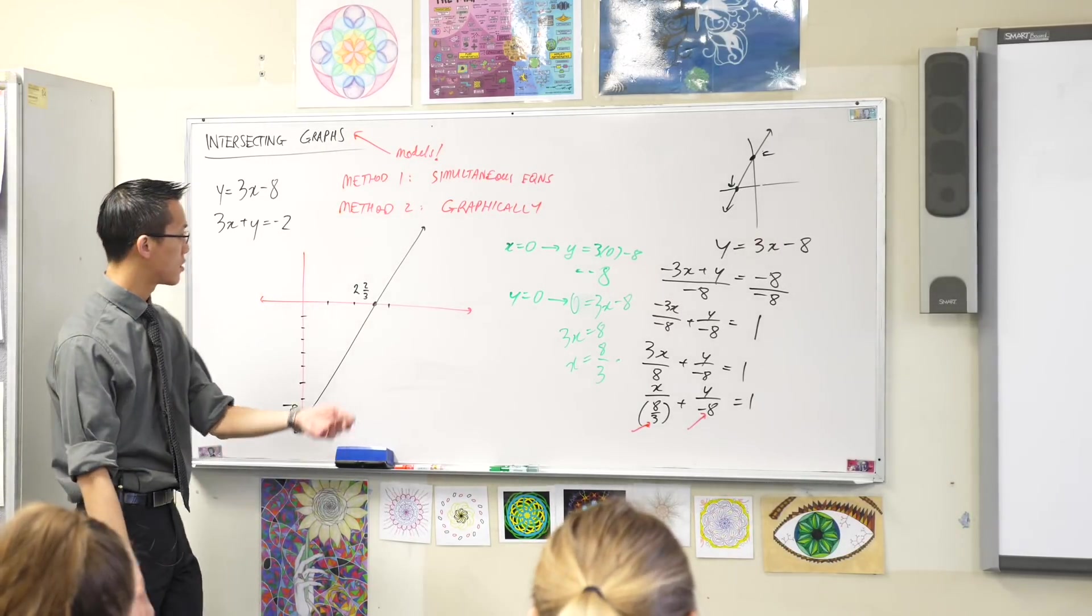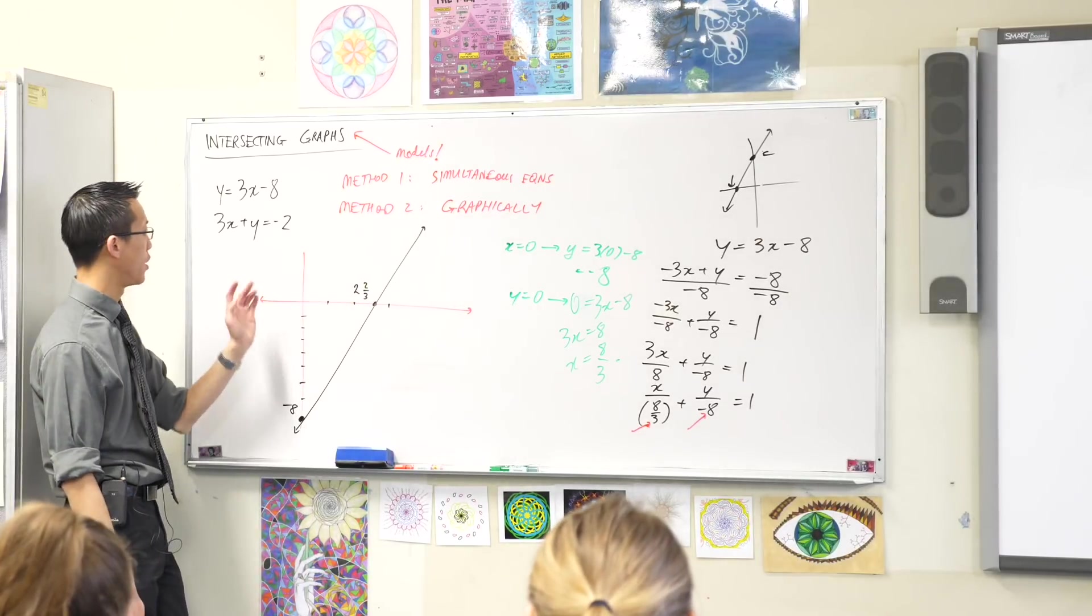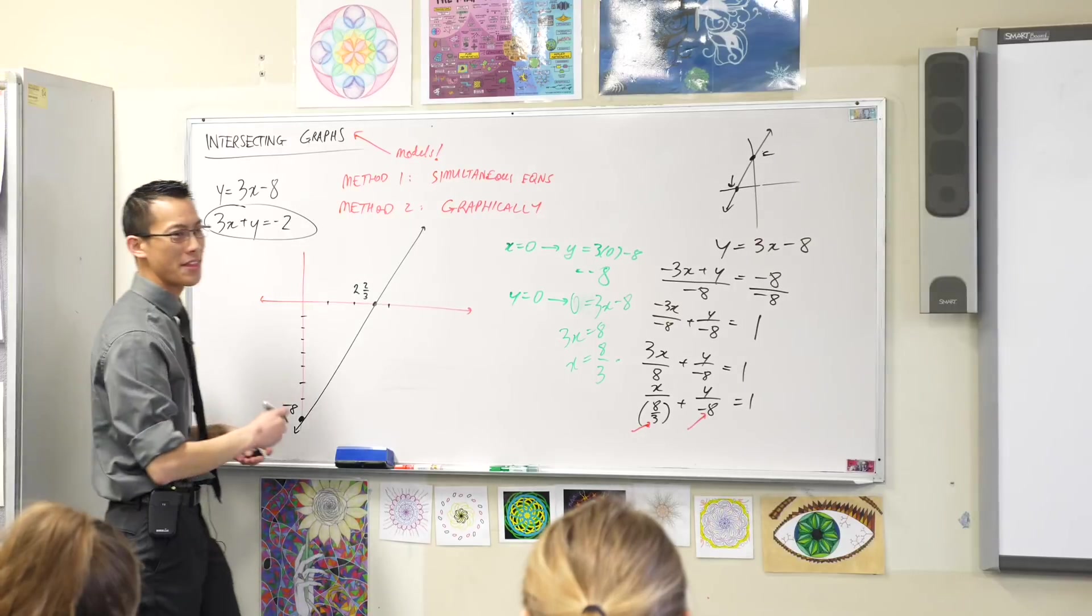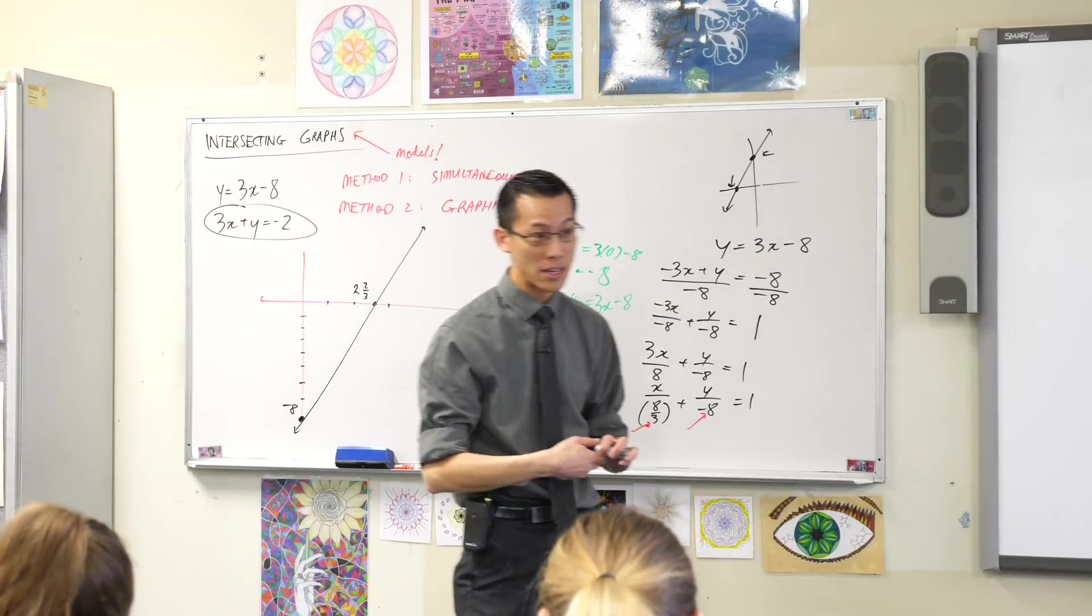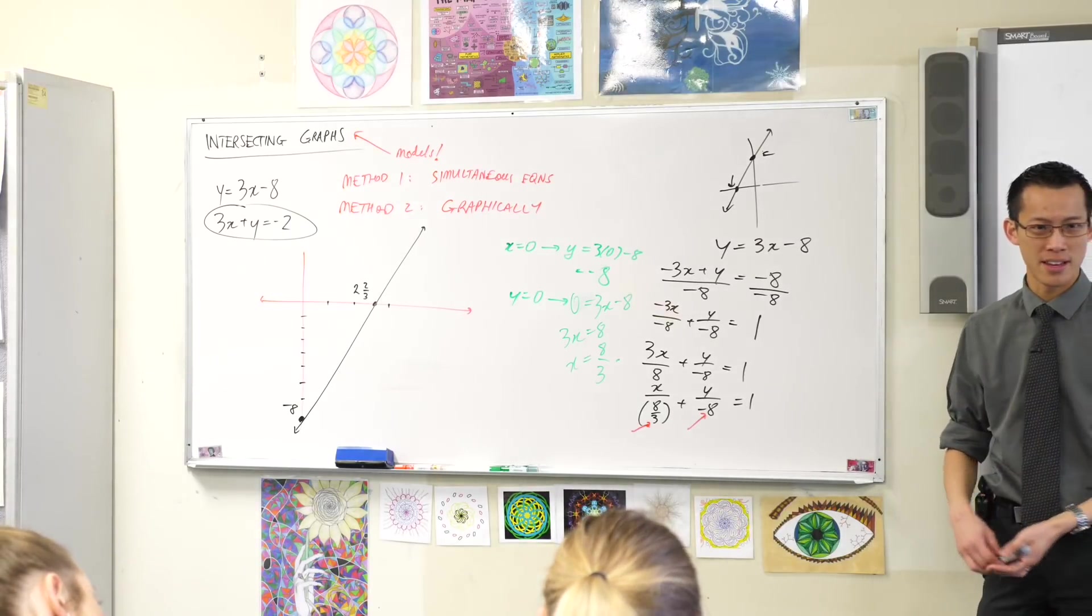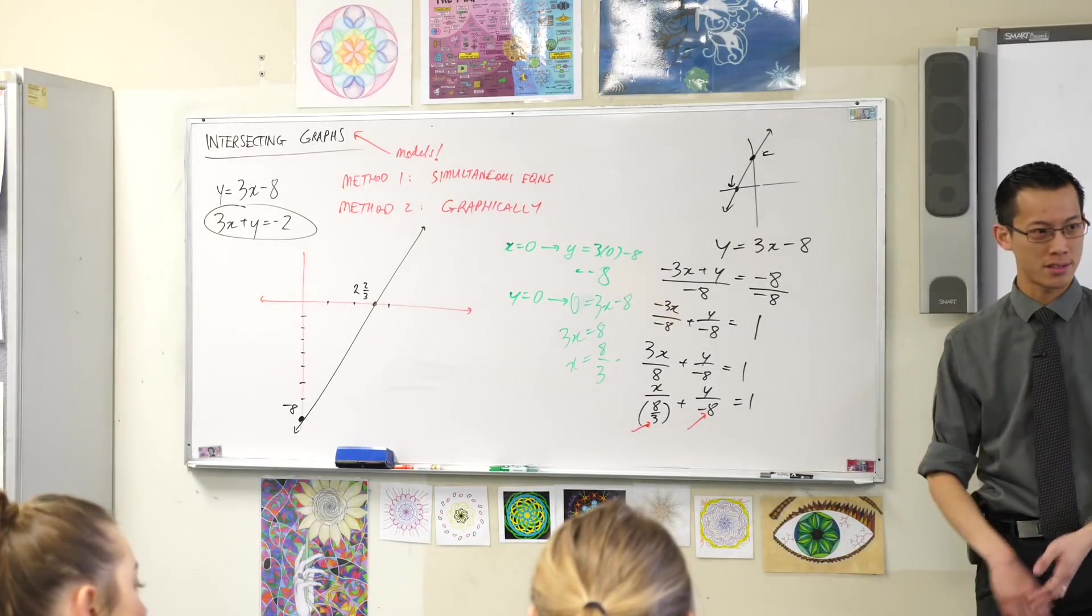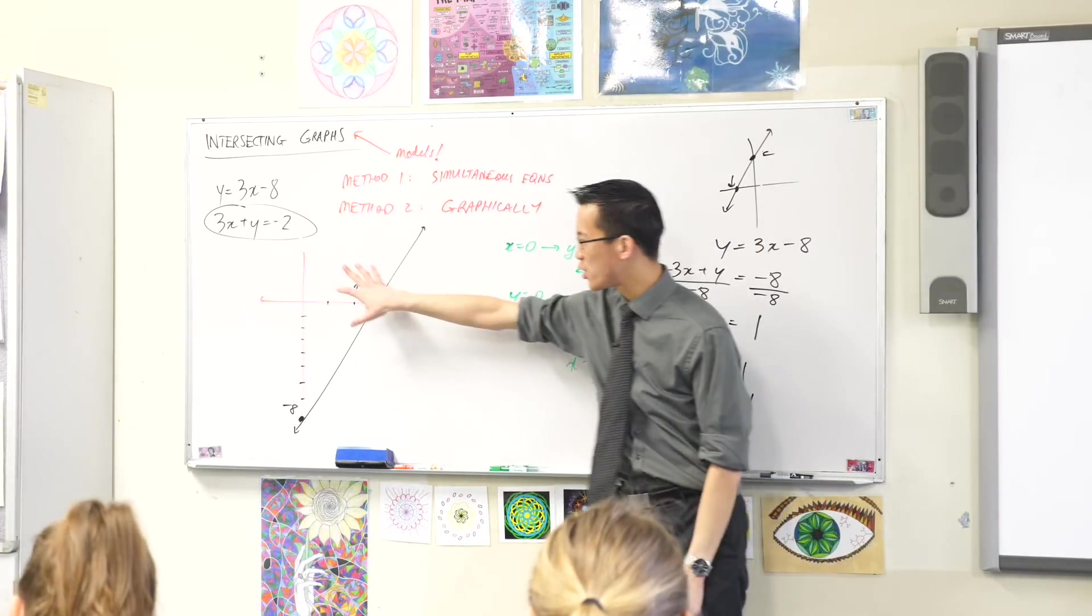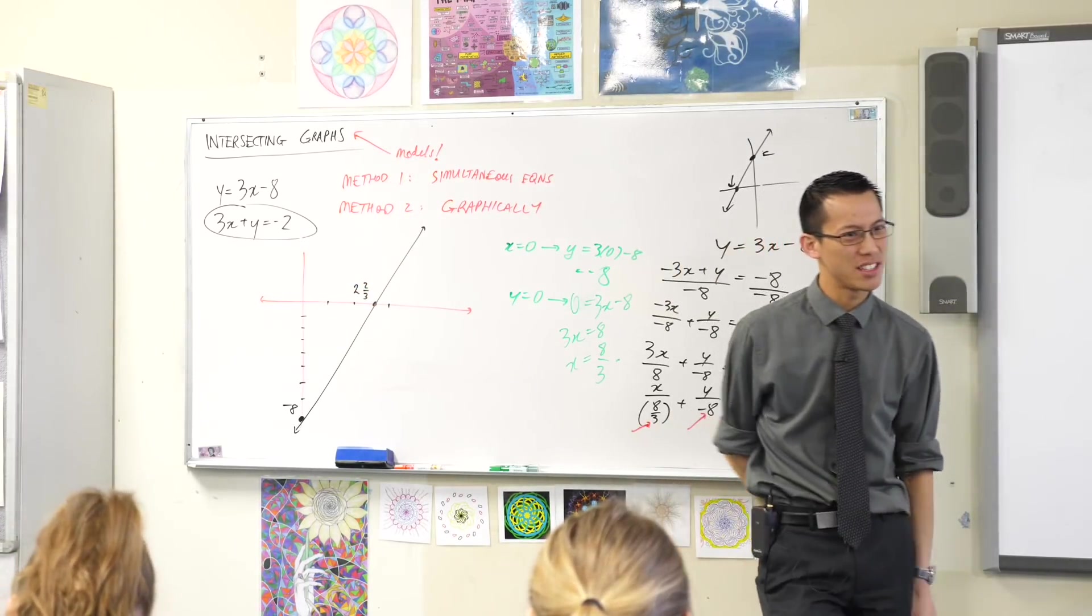Can I give you a minute to use either method, whichever you prefer, to find the intercepts for this guy, because we need to find where they meet, right? Which means we need both pictures on the graph. So I'm going to put up my working for both of those in a minute, but I'll let you have a go first. Whichever way you like, I want to have a picture of this on the same graph. So can you take a minute to do that?